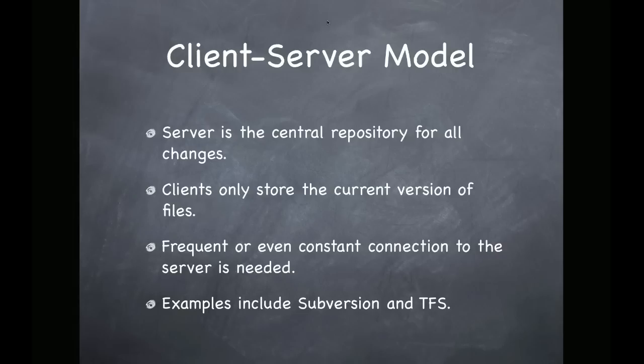So if you needed to go back to another version of a file, the version control system would go get the version that you need from the server and replace your local copy. Because the server has all the versions, you really need to have a pretty consistent connection to the server, either through a local network or the web typically. This is the type of model that is used by Subversion and Team Foundation server.